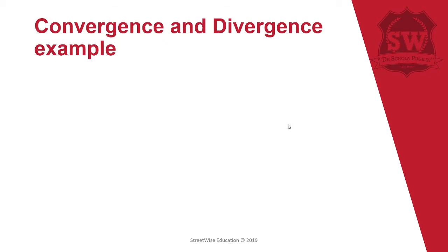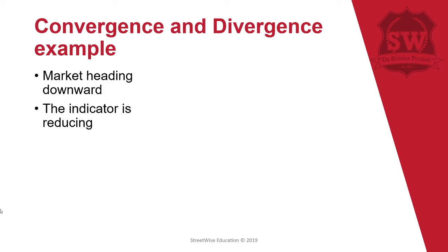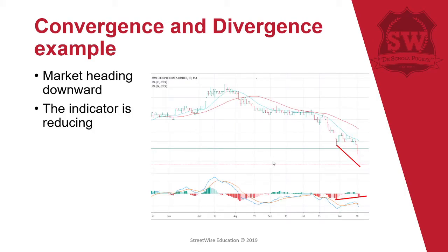Here's an example of convergence: one market is heading down, so you have a market downtrend, and if you're using any indicator, the indicator is actually reducing. For my example, I'm using MACD. As you can see, this is a stock I'm looking at and the market is trending down.